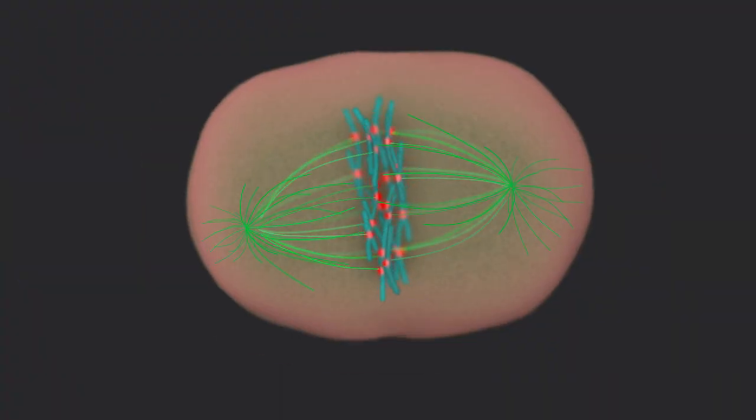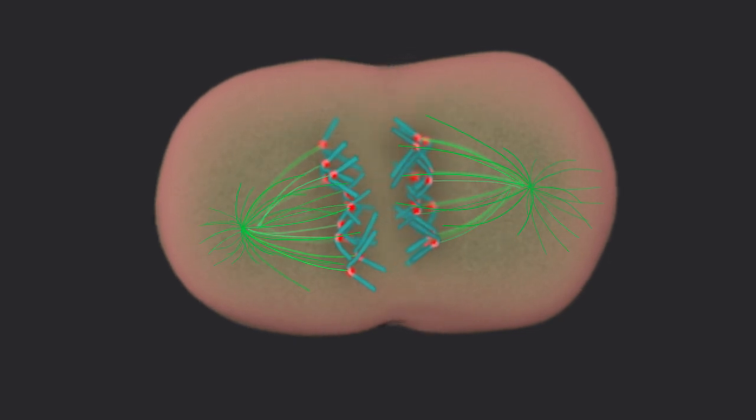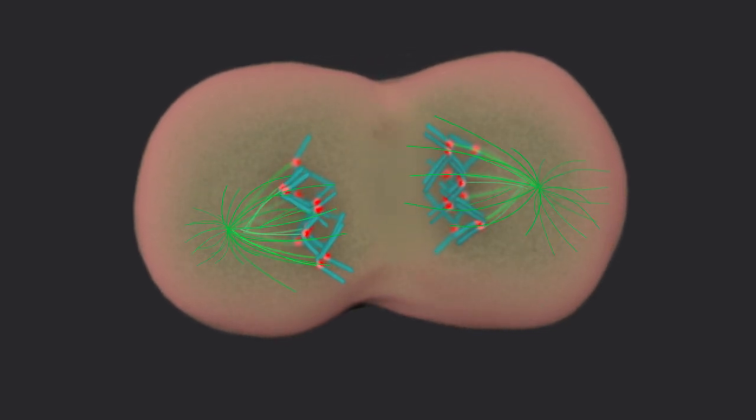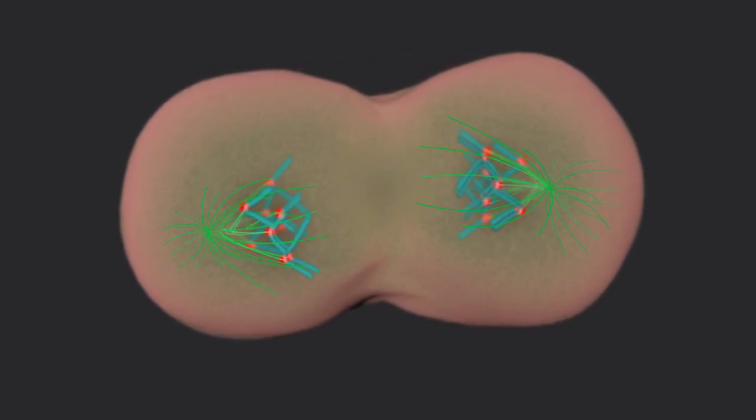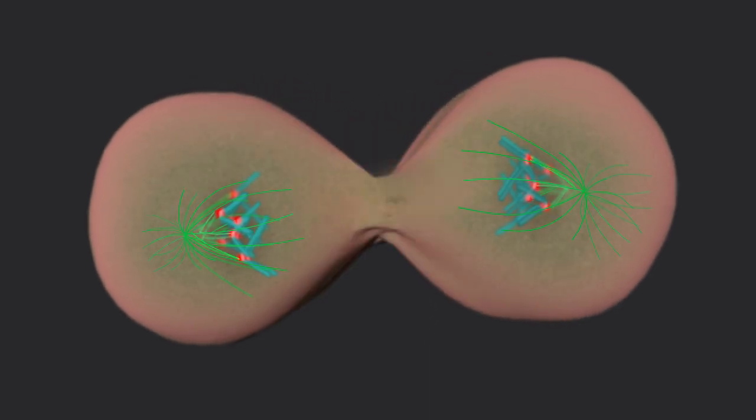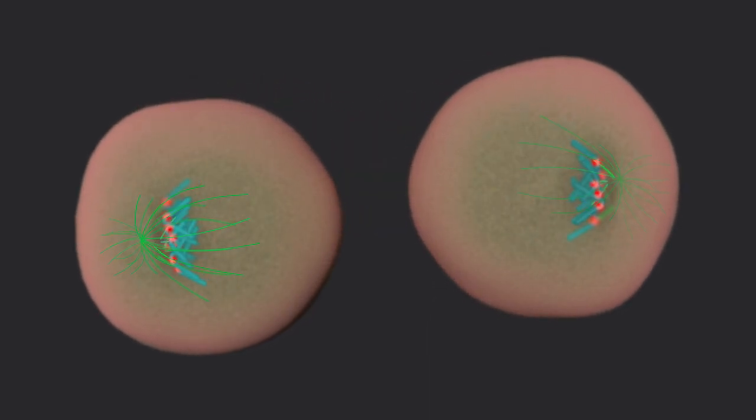We zoom out after each centromere in the cell has properly attached to spindle microtubules. Chromosomes are separated, moved along the spindle to opposite poles, and coincident with cell division, the chromosomes decondense to return to their normal state in the nucleus. A new cell cycle begins.